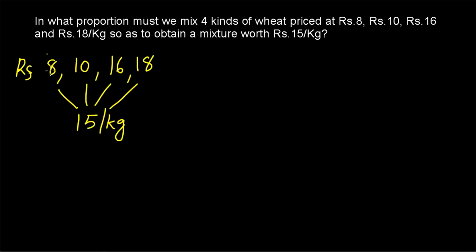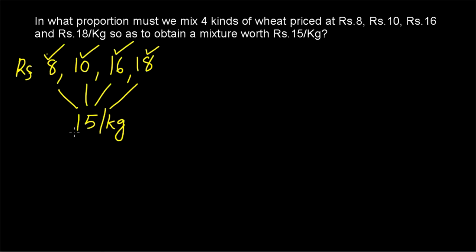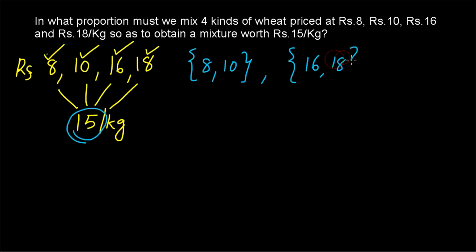At what proportion should these 4 varieties be mixed? How much of Rs 8, Rs 10, Rs 16, and Rs 18 per kg should be taken so that the final mixture is worth Rs 15 per kg? We apply the same method: make 2 groups — one with elements less than the mean and one with elements greater than the mean. Here the mean is 15. So 8 and 10 are less than the mean, and 16 and 18 are greater than the mean. We apply allegation to one element from each group.